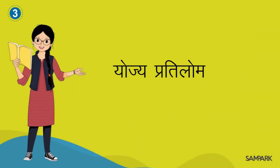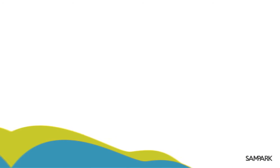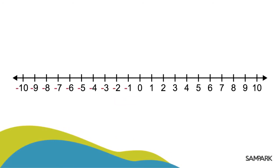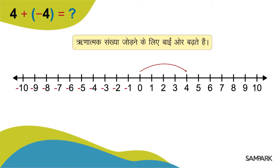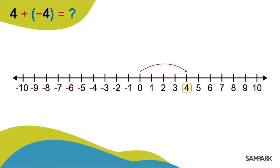योज्य प्रतिलोम। आइए माइनस दस से दस तक की एक संख्या रेखा बना लेते हैं। अब 4 प्लस माइनस 4 पता करते हैं। 0 से 4 कदम दाईं ओर चलते हैं, पहले पूनांक 4 तक। फिर ऋणात्मक पूनांक जोड़ने के लिए बाईं ओर बढ़ते हैं। माइनस 4 जोड़ना है यानी 4 से 4 कदम बाईं ओर चलते हैं — और हम पहुँचे 0 पर। मतलब 4 प्लस माइनस 4 हुआ 0।